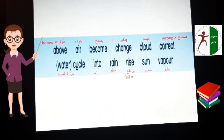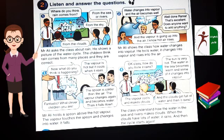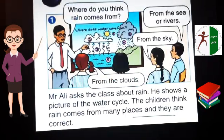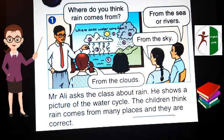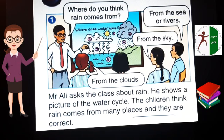Now let's move to the lesson. There are four pictures and four paragraphs. In this picture, there are Mr. Ali and the students in the class. Mr. Ali asks the class about rain. He shows a picture of the water cycle. The children think rain comes from many places and they are correct. الأستاذ علي بسأل الطلاب عن المطر. Where do you think rain comes from? من أين تعتقدوا أن يأتي المطر؟ From the sea or rivers. From the sky. From the clouds. من البحر أو النهر، من السماء، من الغيوم.